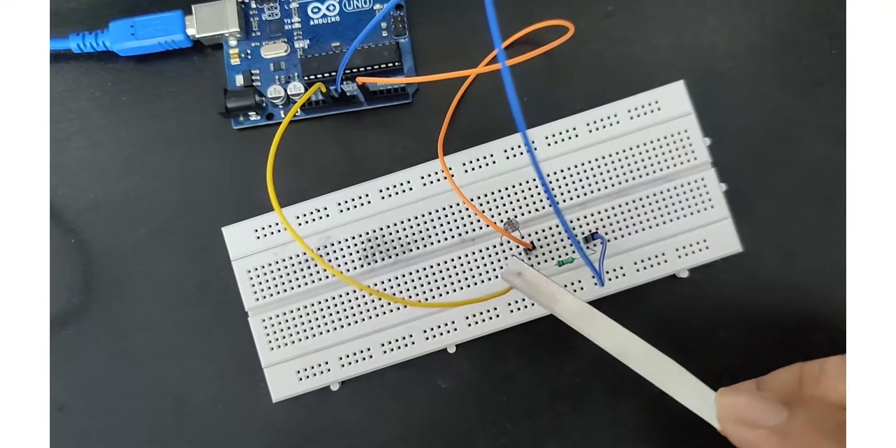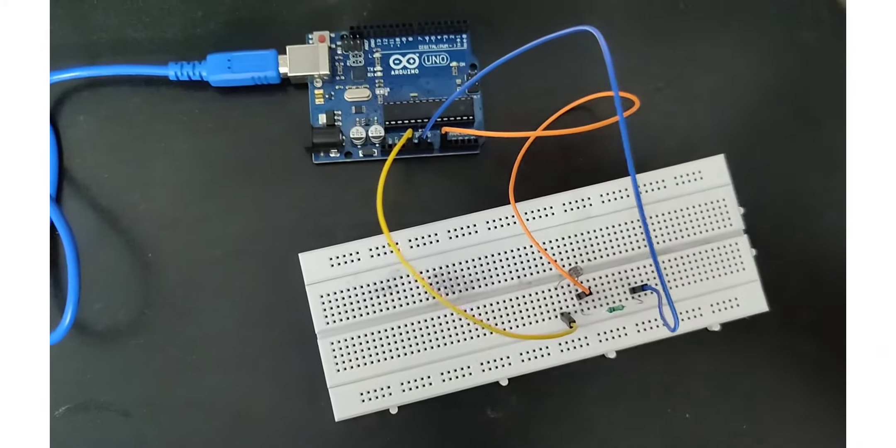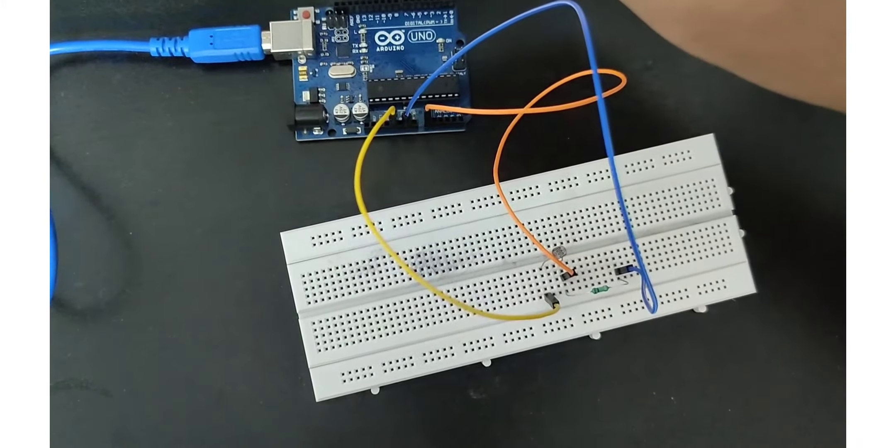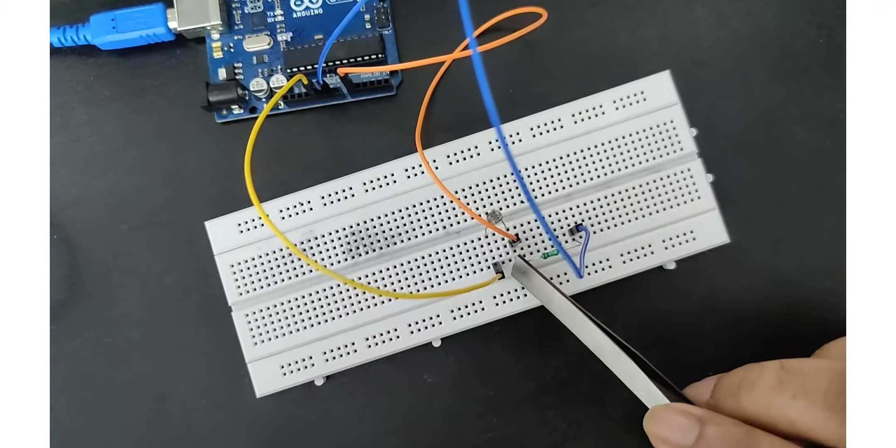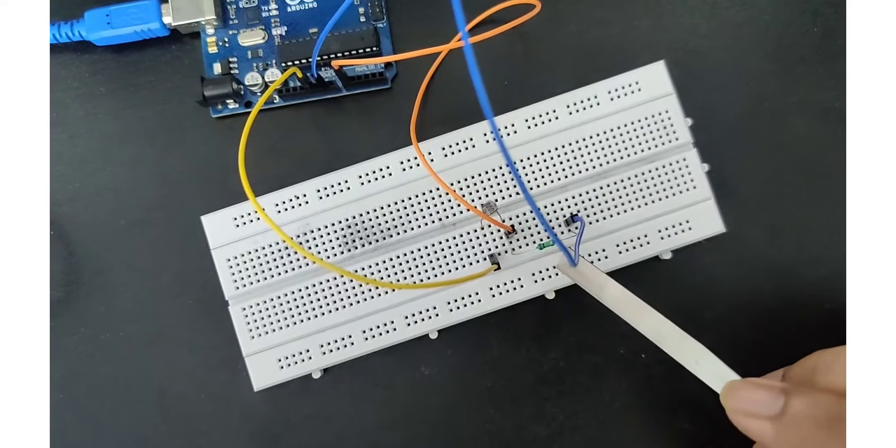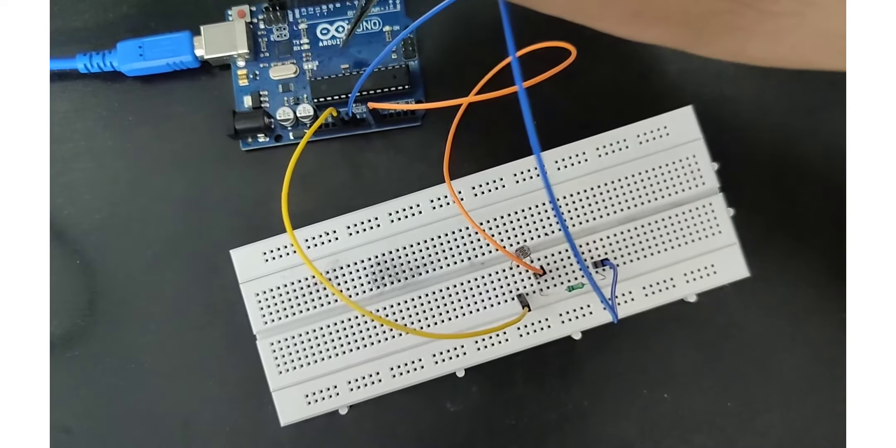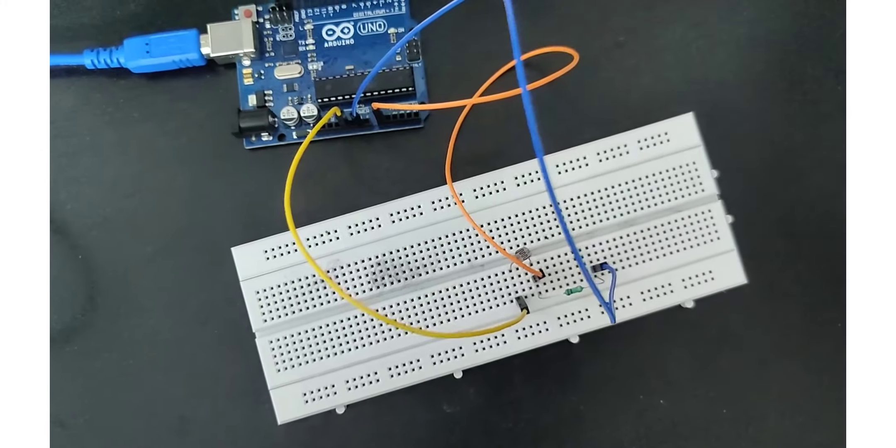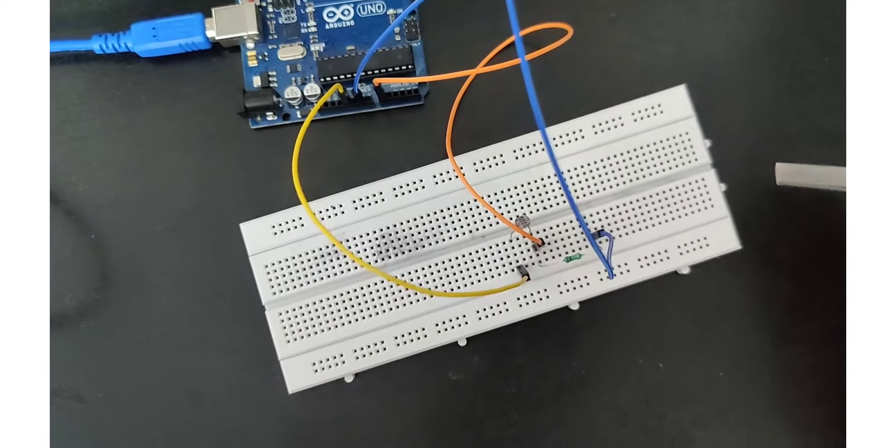The other side of the LDR is connected to analog pin 0 by a jumper wire, and the same end is connected to the resistor. The other terminal of the resistor is connected to the ground of the Arduino board.